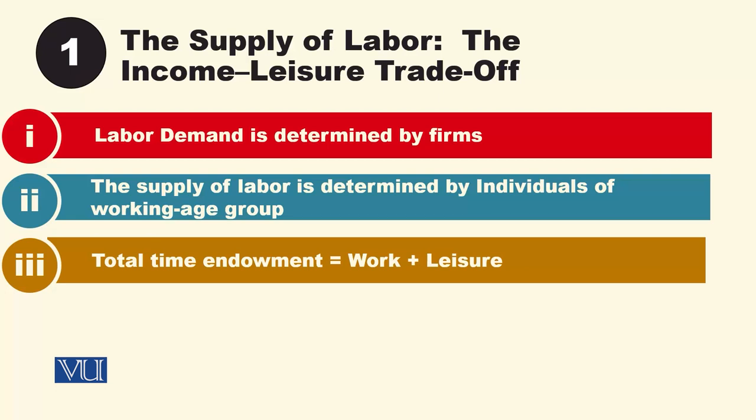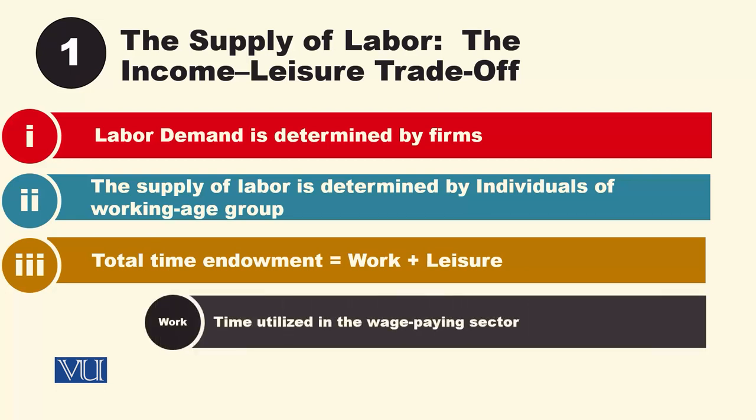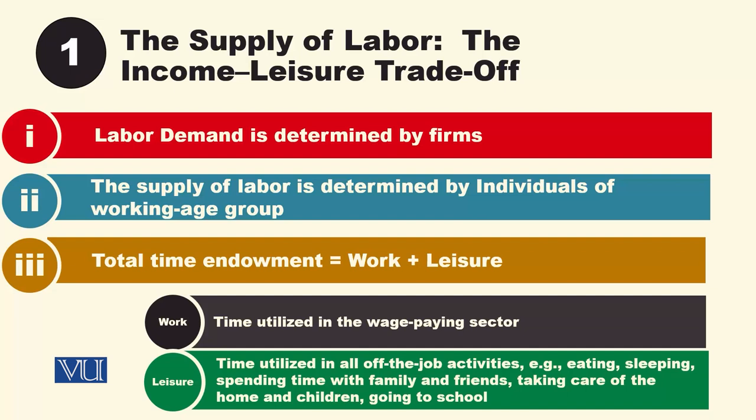The total time endowment is divided between work and leisure. Work means time utilized in wage-paying sectors — for example, those doing a salaried job, doing business for profit, helping with family agricultural work, or working in the agriculture sector.